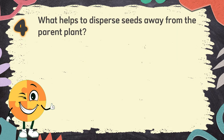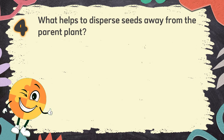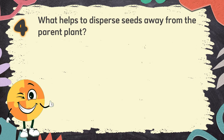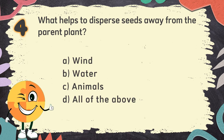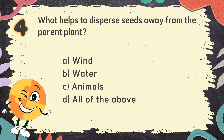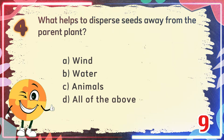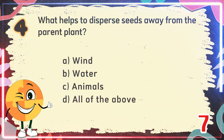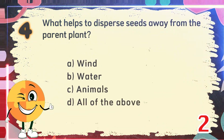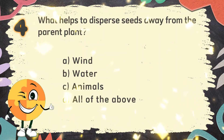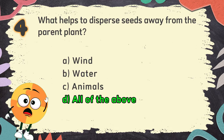Number 4: What helps to disperse seeds away from the parent plant? The choices are: A. Wind, B. Water, C. Animals, D. All of the above. The correct answer is D. All of the above.